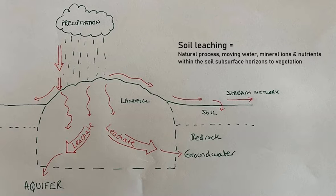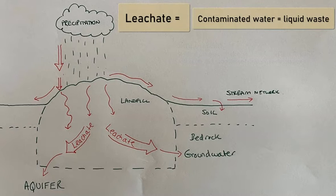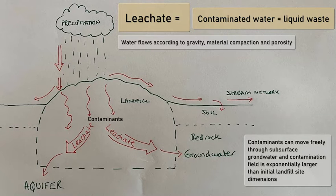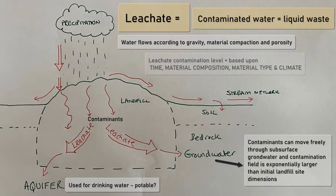However, leachate is that contaminated liquid waste that flows through landfill material in the ground, transferring contaminants — soluble materials and compounds, both organic and inorganic compounds and heavy metals — with the water to deeper layers. It eventually joins groundwater flow, reaches aquifers pumped for drinking water, or flows into rivers, streams, lakes, and ponds through groundwater or overland flow.